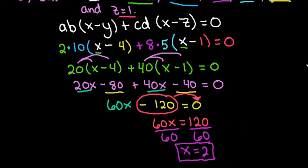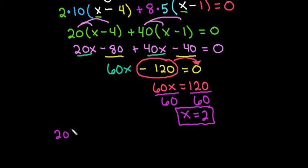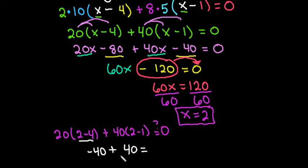And again you can plug this back into your original equation. If I just go back up here, 2 minus 4 would give me negative 2. Negative 2 times 20 would give me negative 40. And over here if I simplify I have 40. So if I take 20 times 2 minus 4 plus 40 times 2 minus 1, we can ask ourselves does this equal 0? And we can see easily that it does. This would give me negative 2 which would give me negative 40. Plus 2 minus 1 gives me 1 times 40. And if I take negative 40 and add it to 40 I do get 0.